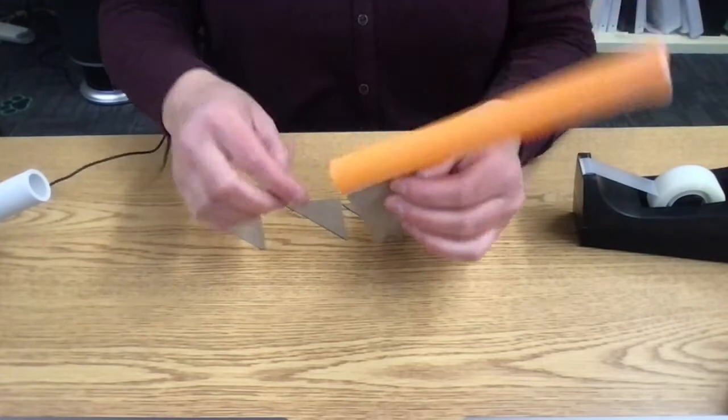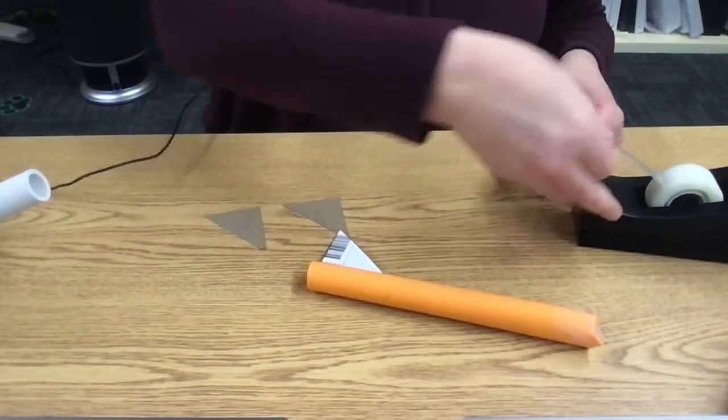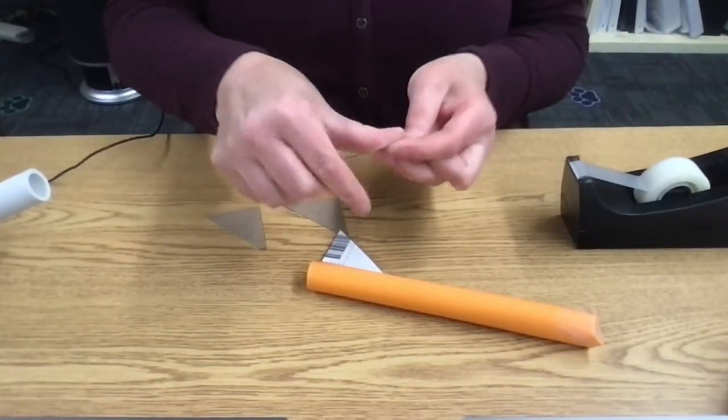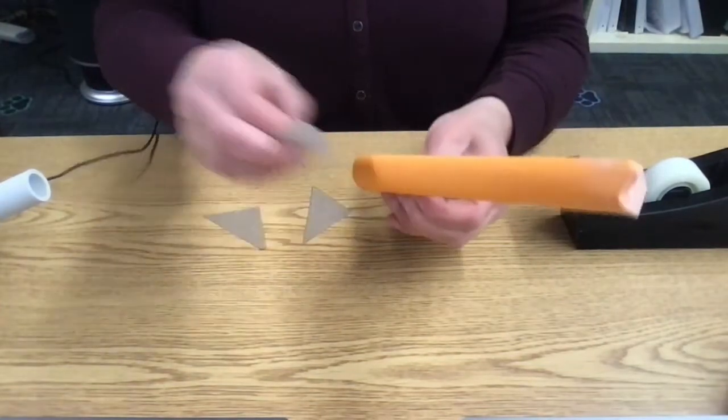So I'm going to tape one of the tall sides to my rocket like that. And then I'm going to try and put one on the opposite side. So again, it helps put the tape on this. And then attach it to the rocket.